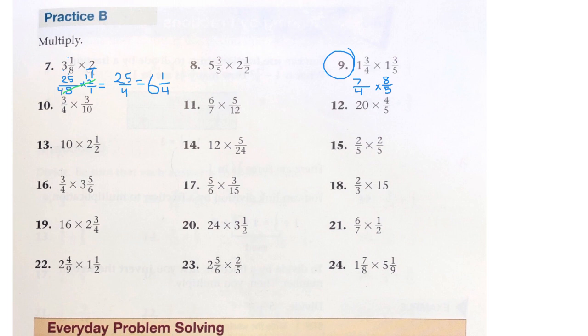Now the next question is, can we cross-cancel? 4 and 8 have a common factor of 4. 4 goes into 4 once. 4 goes into 8 twice. 5 and 7 do not have a common factor other than 1. So they'll stay the same.